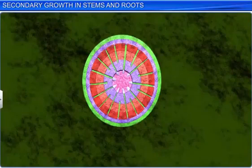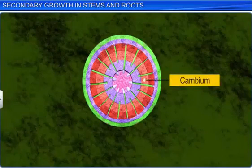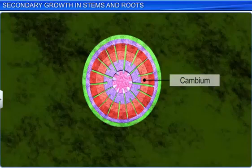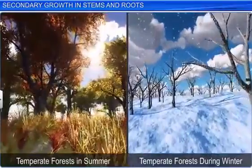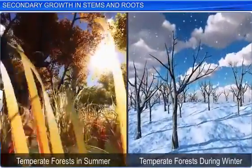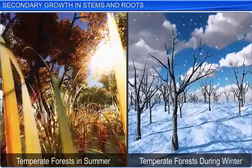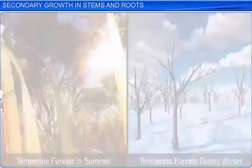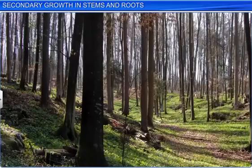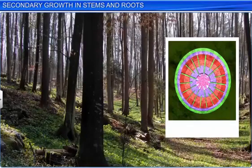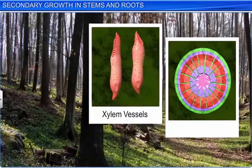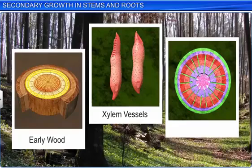During some seasons, the cambium divides actively, while during other seasons, its activity slows down. Consider the example of the temperate regions, where climatic conditions are not uniform throughout the year. During spring, when the cambium is active, it produces a lot of xylem elements with vessels that have wider cavities. Wood formed during this season is called spring wood or early wood.